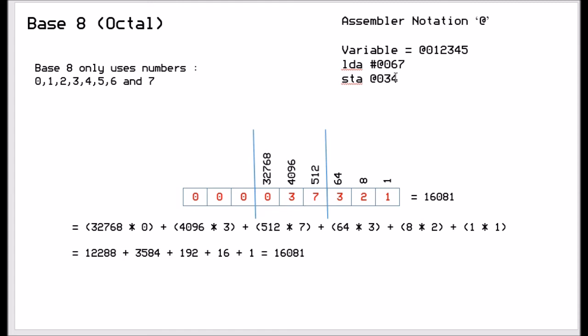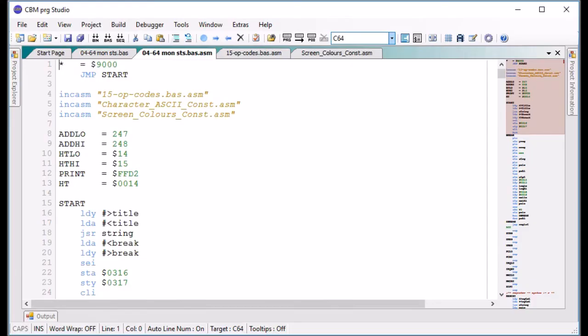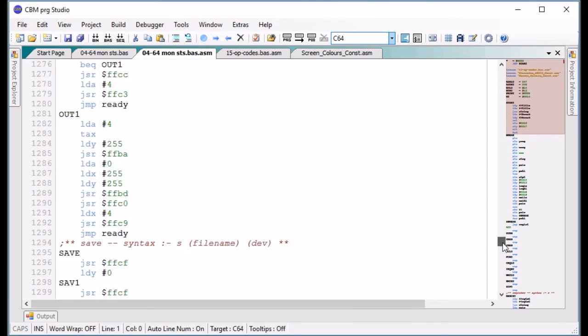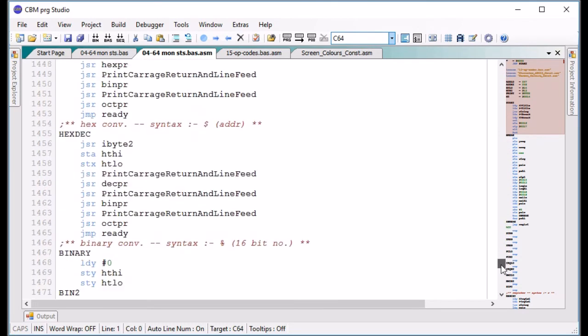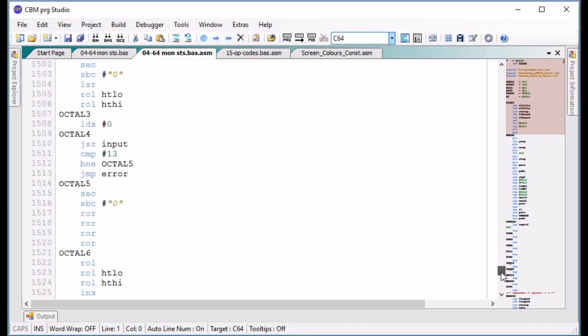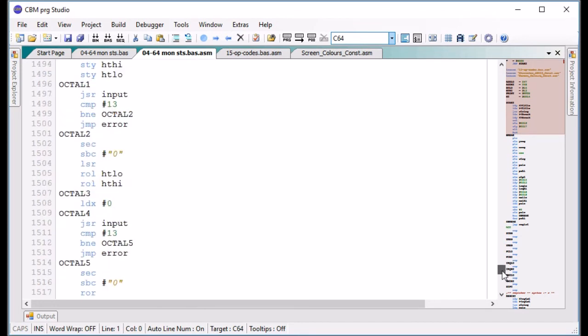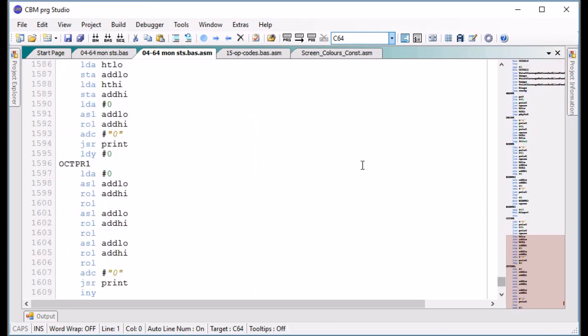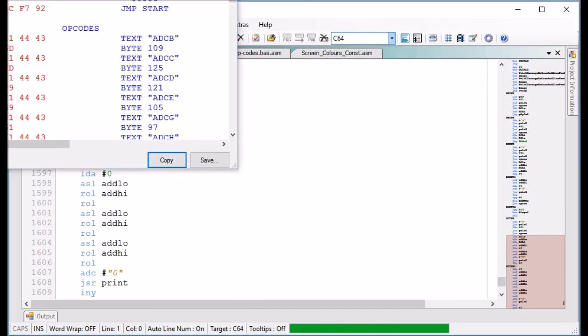Now I can show you how to use these. What I'm going to do is I'm going to go over to some code that I've written, and this is my machine code assembler. I've just managed to convert it from my old assembly program to the new assembler, which is in CBM PRG Studio. So what I'll do is I'll fire the program up in the C64.